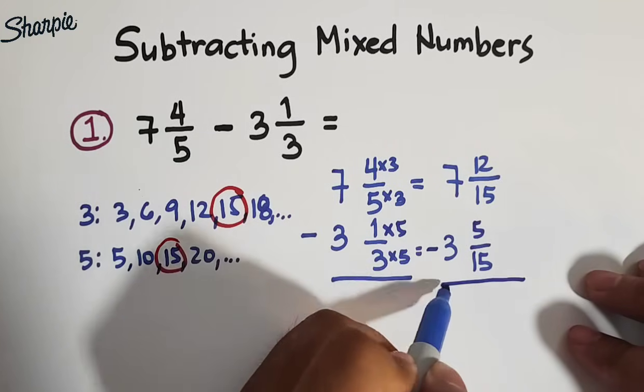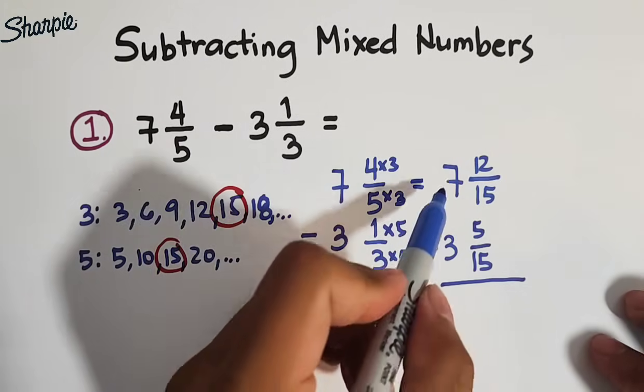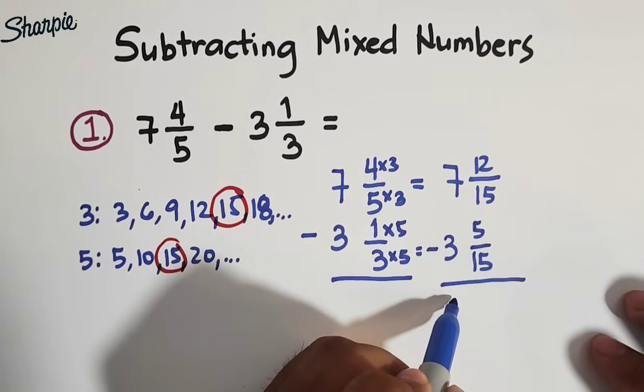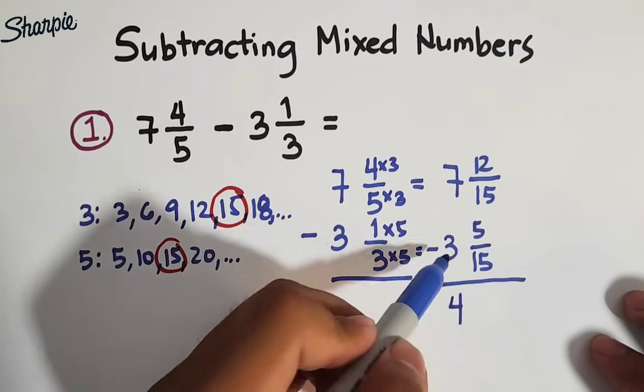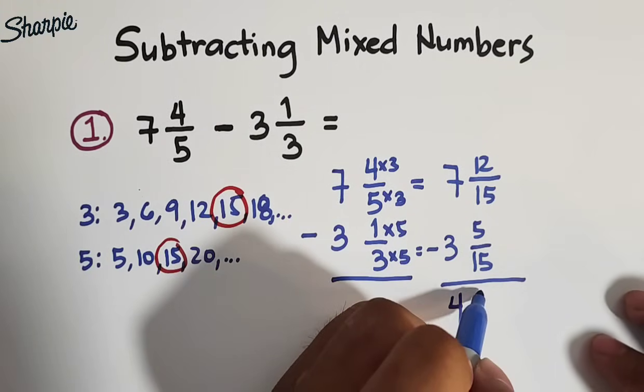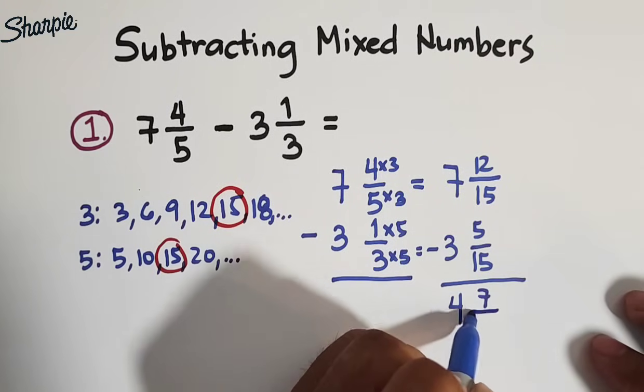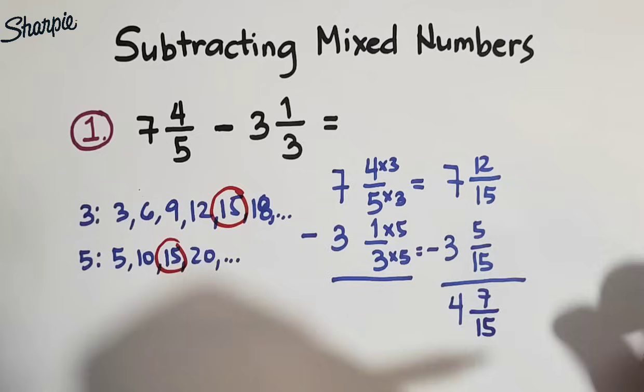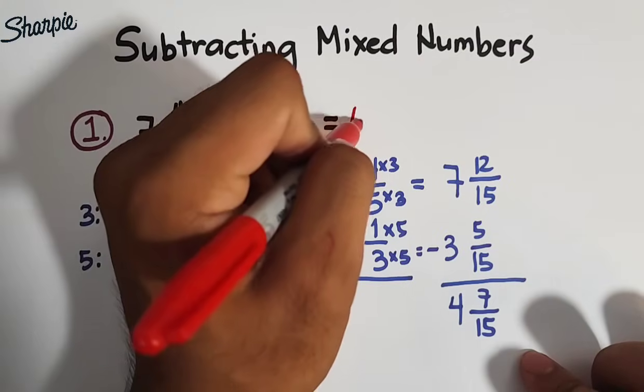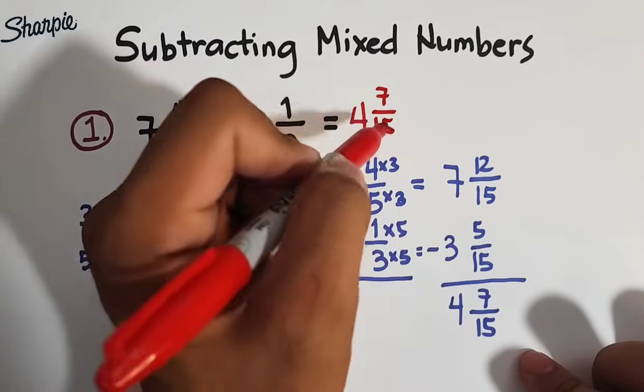So now, we are ready to subtract these mixed numbers. So first, we will subtract the whole numbers, 7 minus 3, that is equivalent to 4. And for the fractions, 12 minus 5, that is equivalent to 7. And copy your common denominator, which is 15. Therefore, guys, the correct answer in item number 1 is simply 4 and 7 over 15.